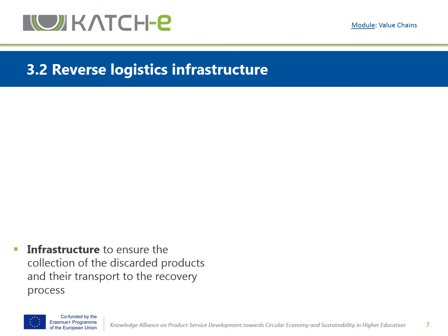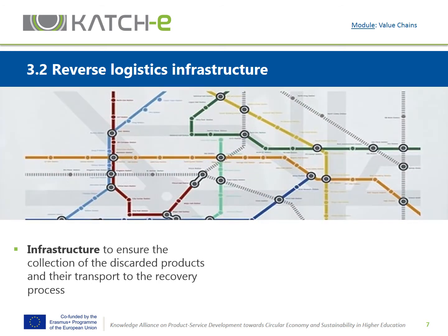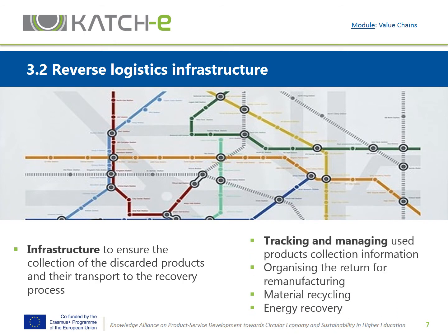An infrastructure is necessary to ensure the collection of discarded products and their transport to the recovery process. Once a product is produced and sold, the manufacturer's control level over the further fate of the product reduces dramatically, and it is generally rather difficult to track where the products are, what state they reach end of life, and how to return them back for remanufacturing. Tracking and managing used products and organizing their return represents a high share of transaction costs.